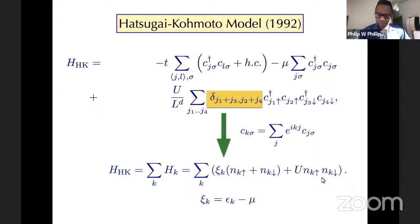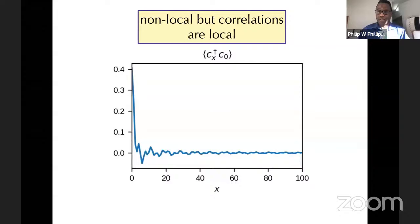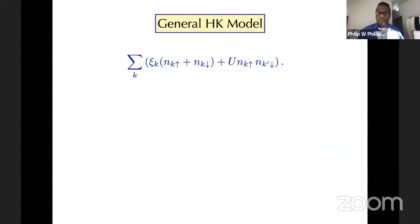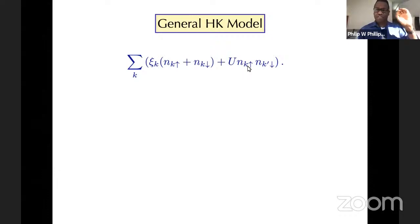Because of the center-of-mass constraint, the correlators in this model die off very quickly, so there is a sense of locality even though there are non-local interactions. The general HK model has n_{k↑} n_{k'↓} — these don't have to be the same momenta. As long as you're summing over one or two momenta, this term will always be relevant relative to the kinetic energy.